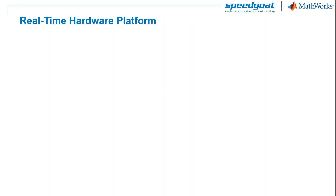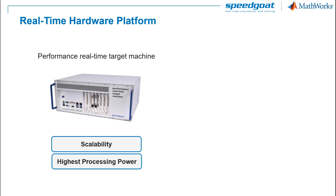Now on the other side, there are mainly two real-time computers suitable for rapid control prototyping for power electronics and motor control. The Performance real-time target machine is a 19-inch rack system. It's very scalable, can include hundreds of IO channels, and offers the highest processing power, equipped with the latest generation multi-core Intel CPUs and Xilinx FPGAs.